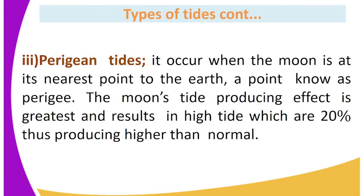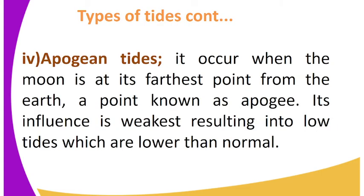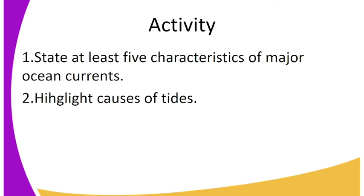The third type is perigee tides. It occurs when the moon is at its nearest point to the earth, a point known as perigee. The moon's tide-producing effect is greatest and results in high tides which are 20% higher than normal. The fourth type is apogee tides, which occur when the moon is at its farthest point from the earth, a point known as apogee. Its influence is weakest, resulting in low tides which are lower than normal. That marks the end of today's lesson.